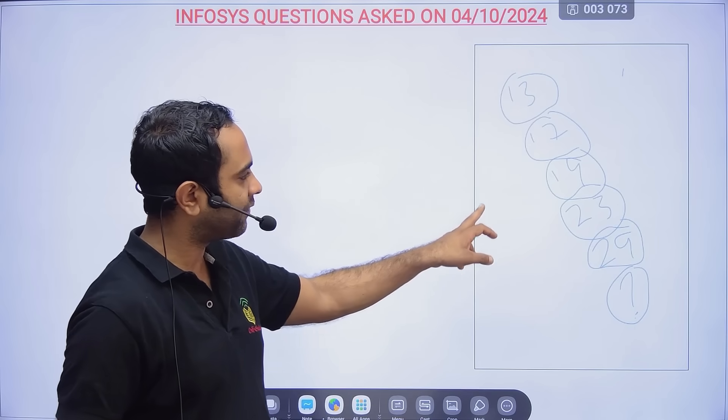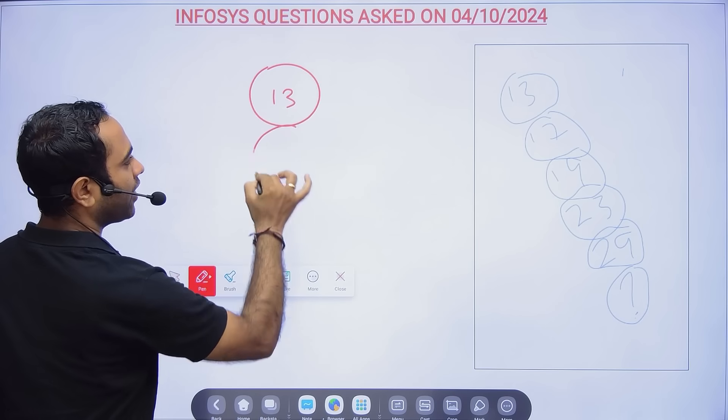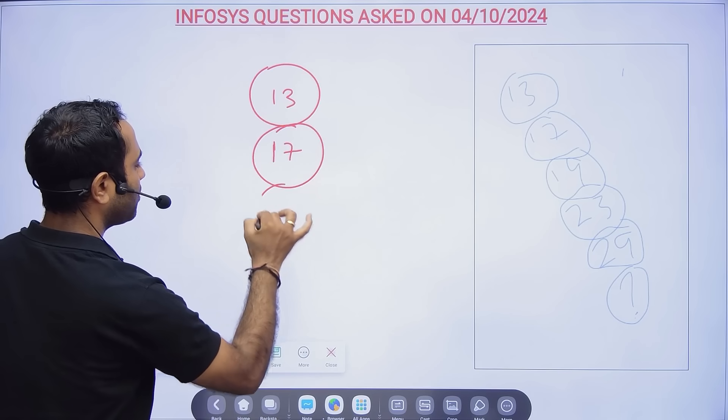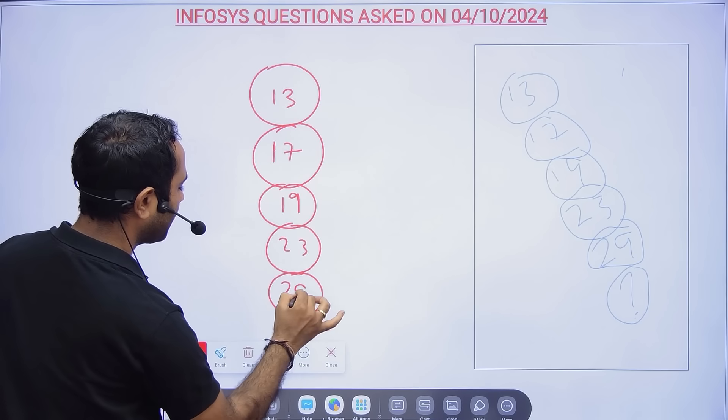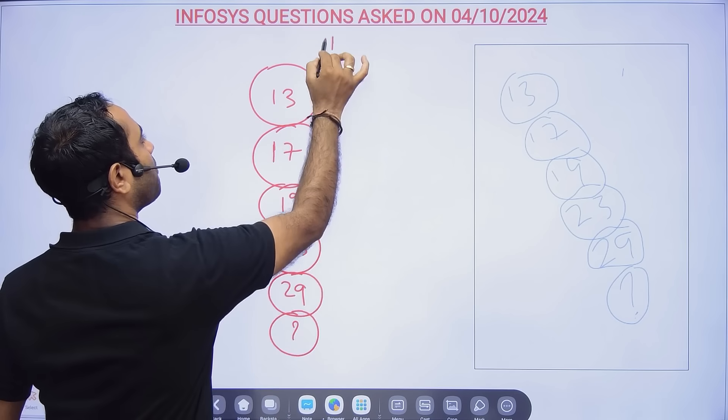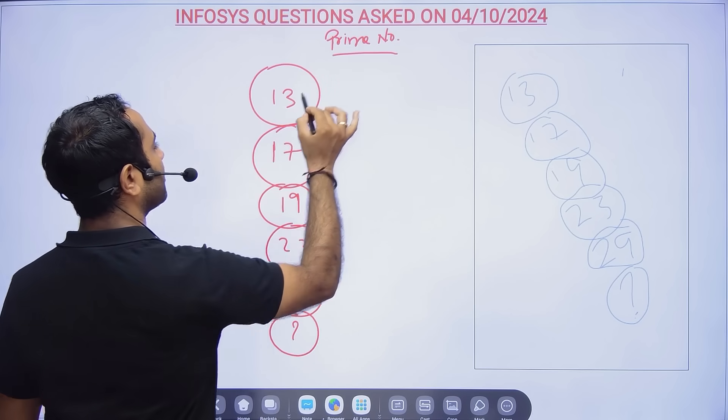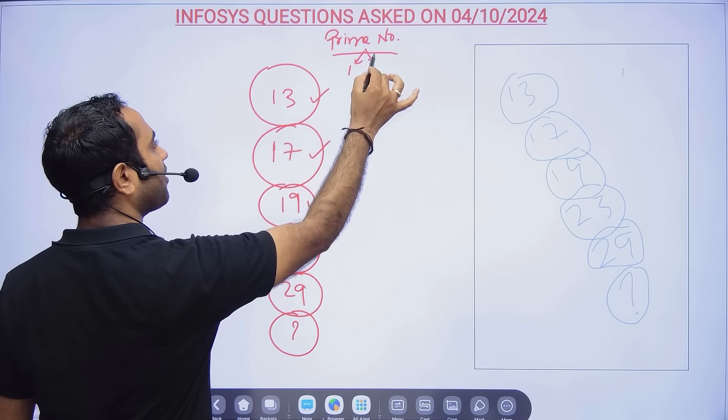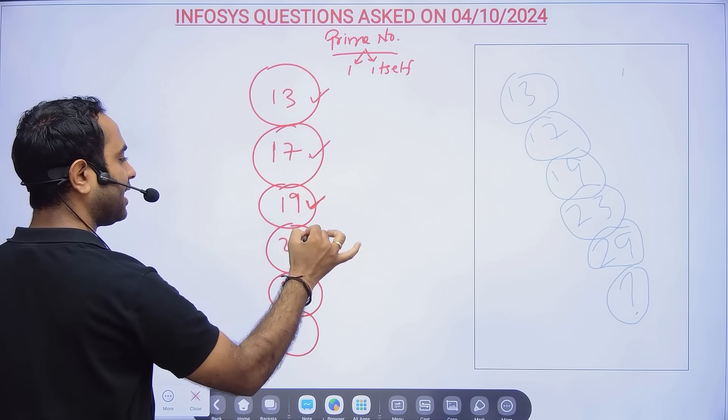Next we have 13, 17, 19. Friends, you know prime numbers, right? This is a prime number series. After 13, the next prime number is 17, next is 19, next is 23, next is 29.